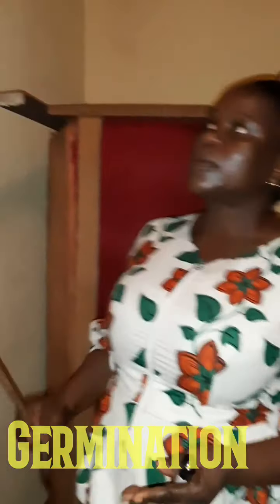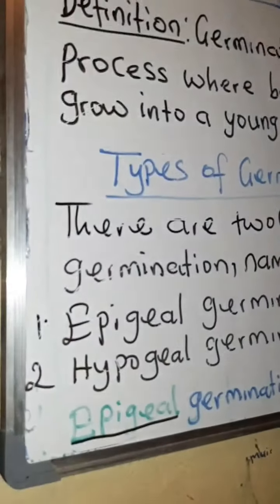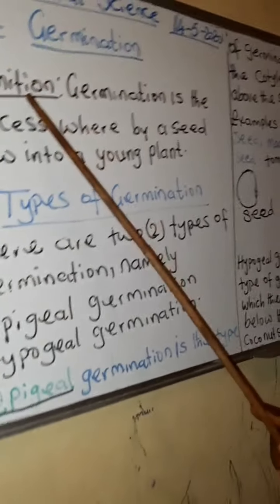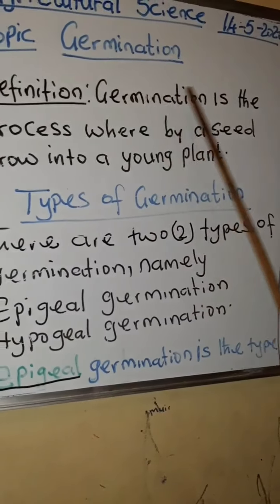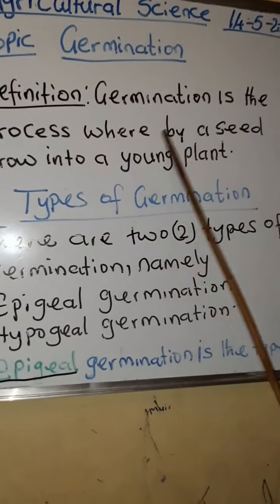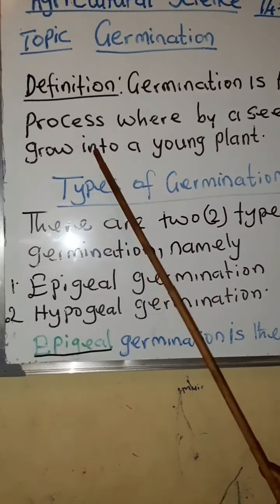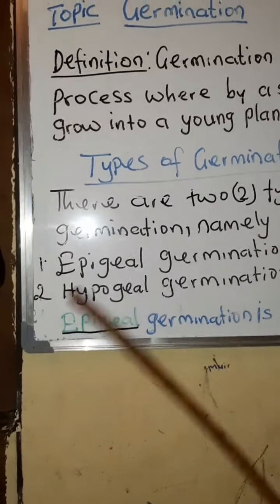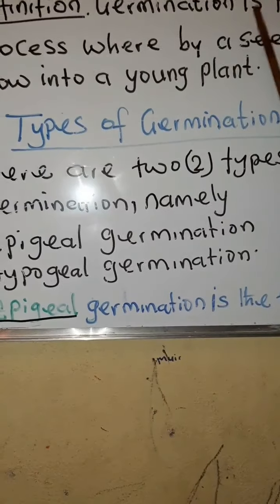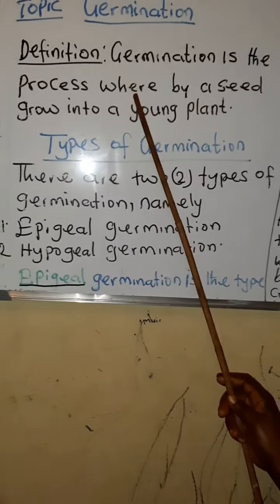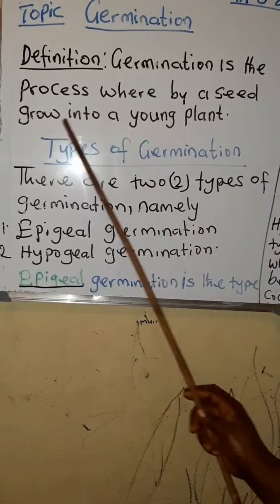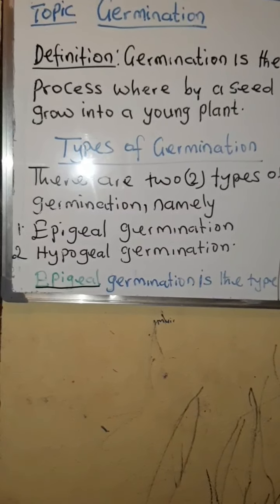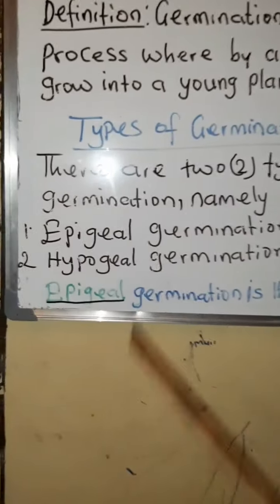What is germination? Germination is a process whereby a seed grows into a young plant.